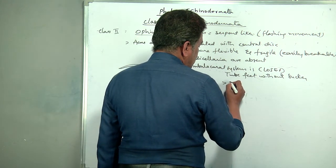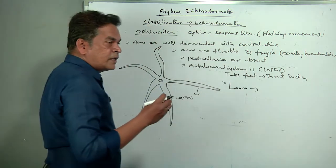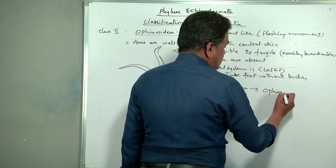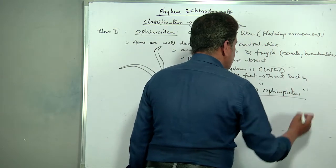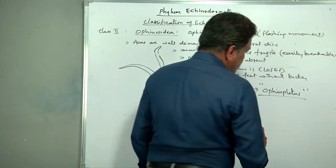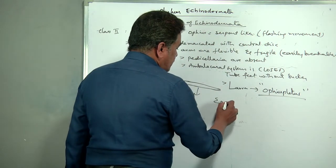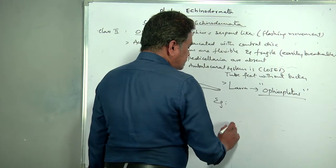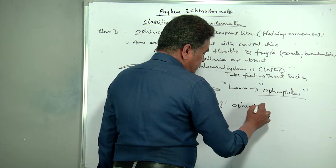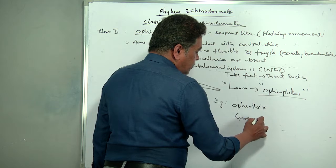The larva of Ophiuroidea is ophiopluteus — from here onwards, larva names represent the class name itself. Examples of Ophiuroidea: Ophiothrix and Gorgonocephalus. Madreporite is on the oral surface in Ophiuroidea.